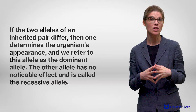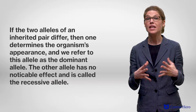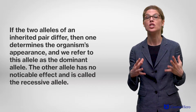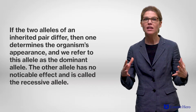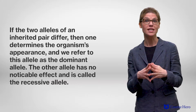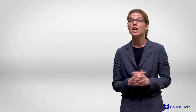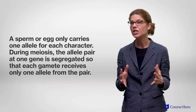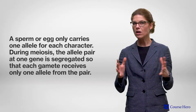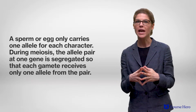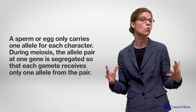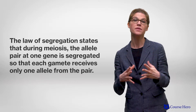Three: if the two alleles of an inherited pair differ, then one determines the organism's appearance, and we refer to this allele as the dominant allele. The other allele has no noticeable effect and is called the recessive allele. A sperm or egg — a gamete — only carries one allele for each character. This is because during meiosis, the allele pair at one gene is segregated so that each gamete receives only one allele from the pair. This is known as Mendel's law of segregation.